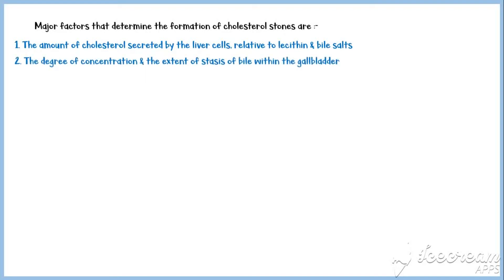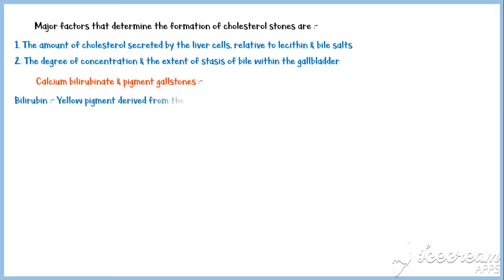And the degree of concentration and the extent of stasis of bile within the gallbladder. Calcium bilirubinate and pigment gallstones are relatively less common than cholesterol gallstones. Bilirubin is a yellow pigment derived from the breakdown of heme and is actively secreted into the bile by liver cells.